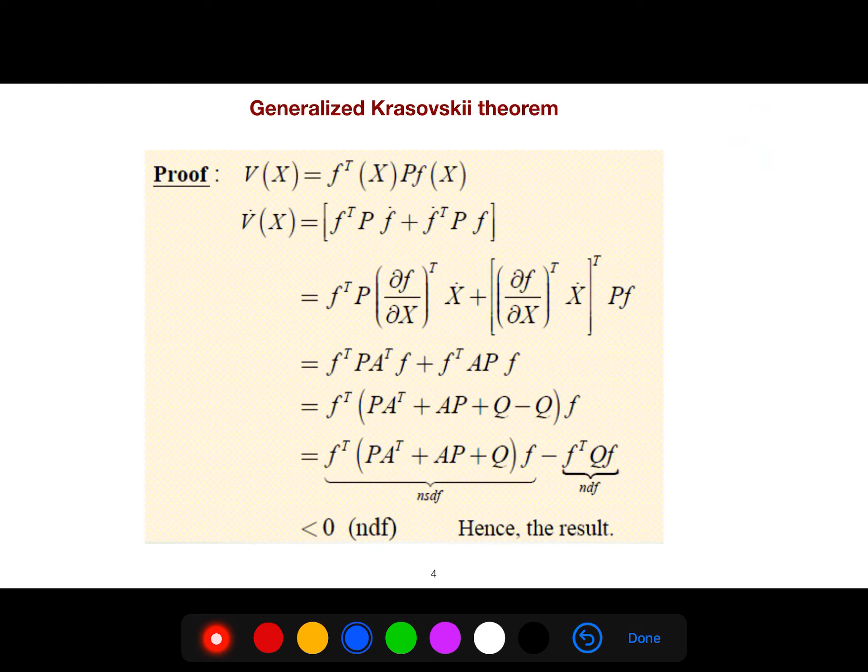Generalized Krasovskii theorem, the proof of that is very simple. You just write, you differentiate with respect to time, you will see that these terms, instead of this one, you can see that this is negative definite. Therefore, because the dynamics of this, you have a Lyapunov function, and the dynamics, the energy is reduced, and then your state space is contracted, and finally, if you have a fixed point at zero, it converges to that.